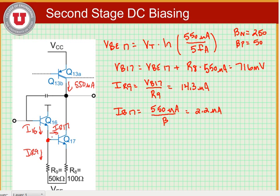Now we know that I16 is equal to the sum of the currents flowing into the resistor R9 and the base of transistor 17. So we can say I16 is equal to IR9 plus IB17, which is equal to 16.5 microamps.